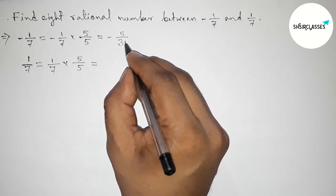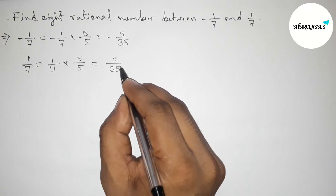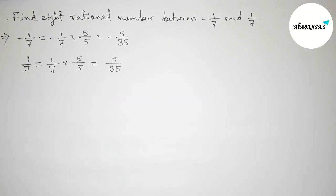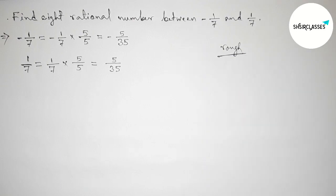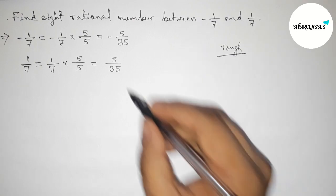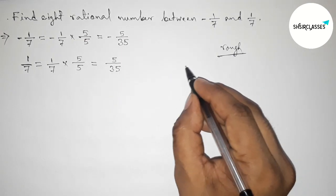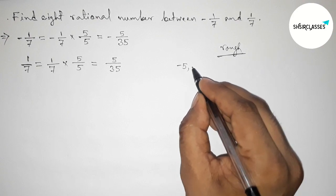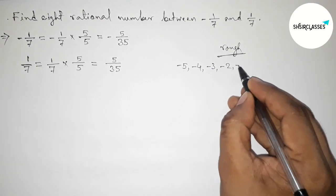5/35 and here 5/35. Okay, so now discussing here some important calculation. Here both the denominators are same. Next, between -5 to 5, we can get 8 integers